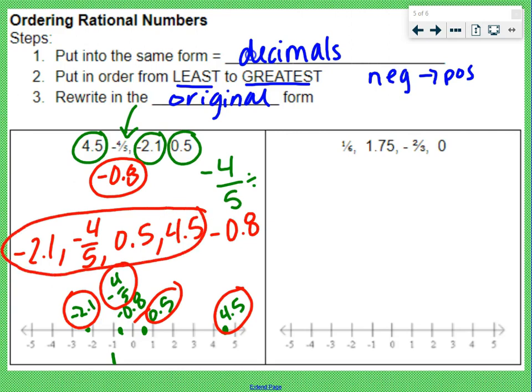Our second example here. We have one-sixth, which we need to convert to a decimal. So we would do 1 divided by 6, which gives us 0.16 with the 6 repeating. 1.75 is good, already a decimal. Negative two-thirds needs to be converted, so we do negative 2 divided by 3, which gives us negative 0.6 repeating. And 0 is good, we know where 0 is.